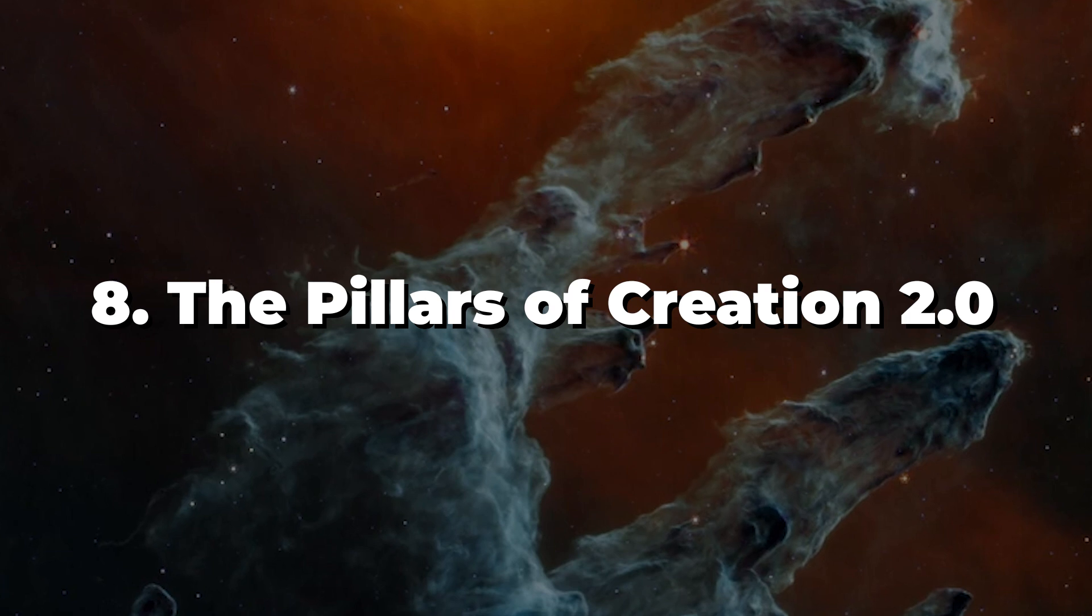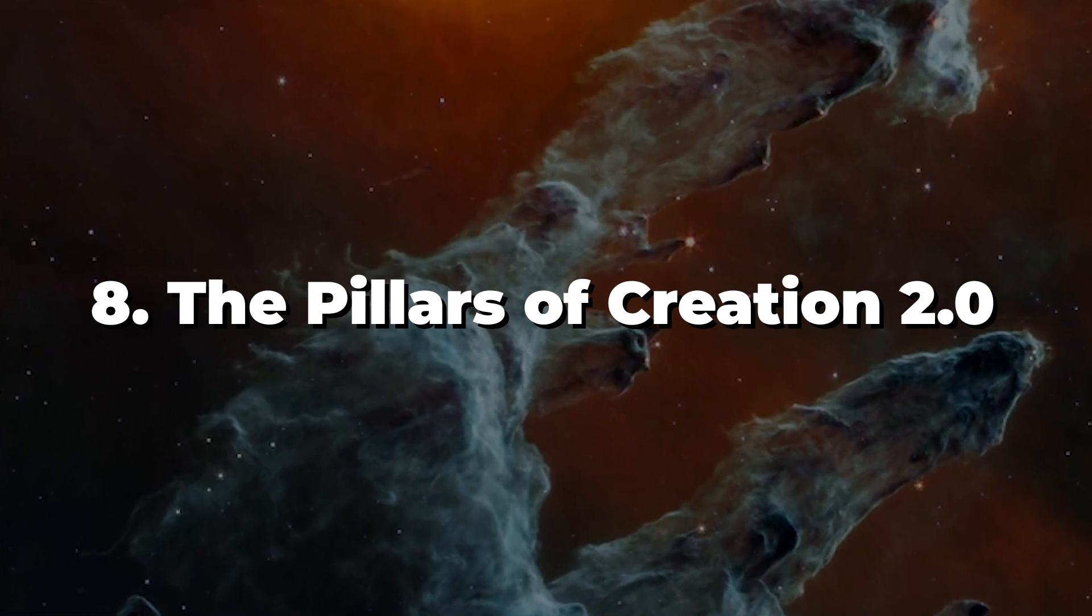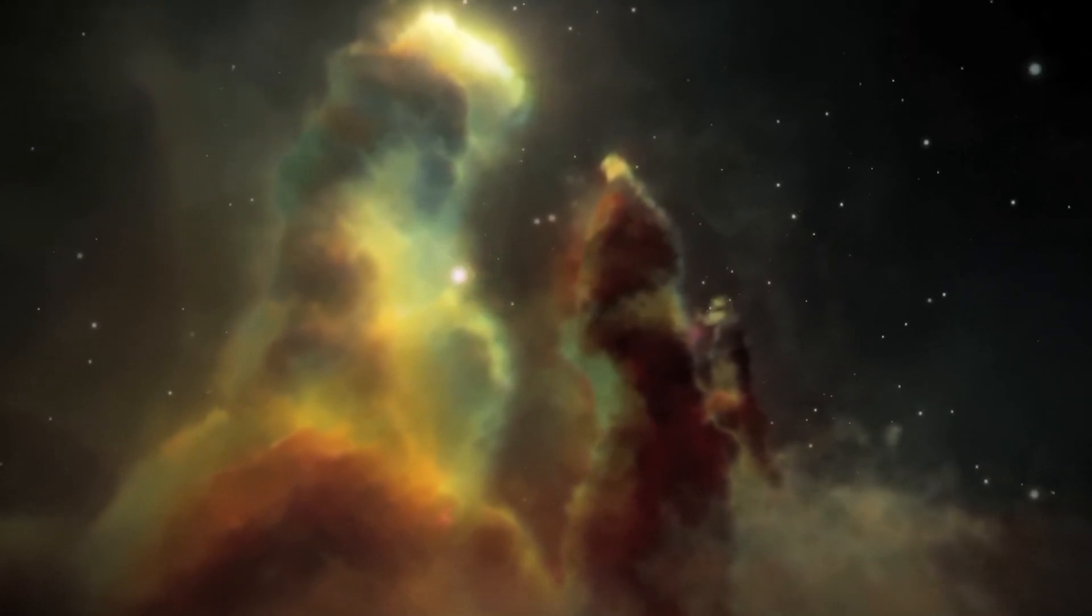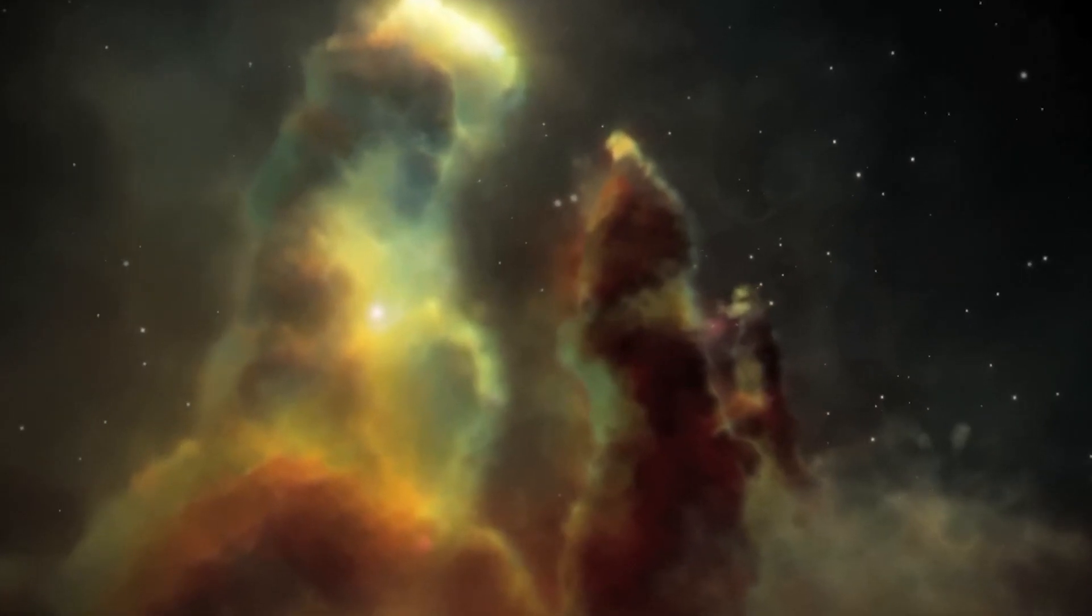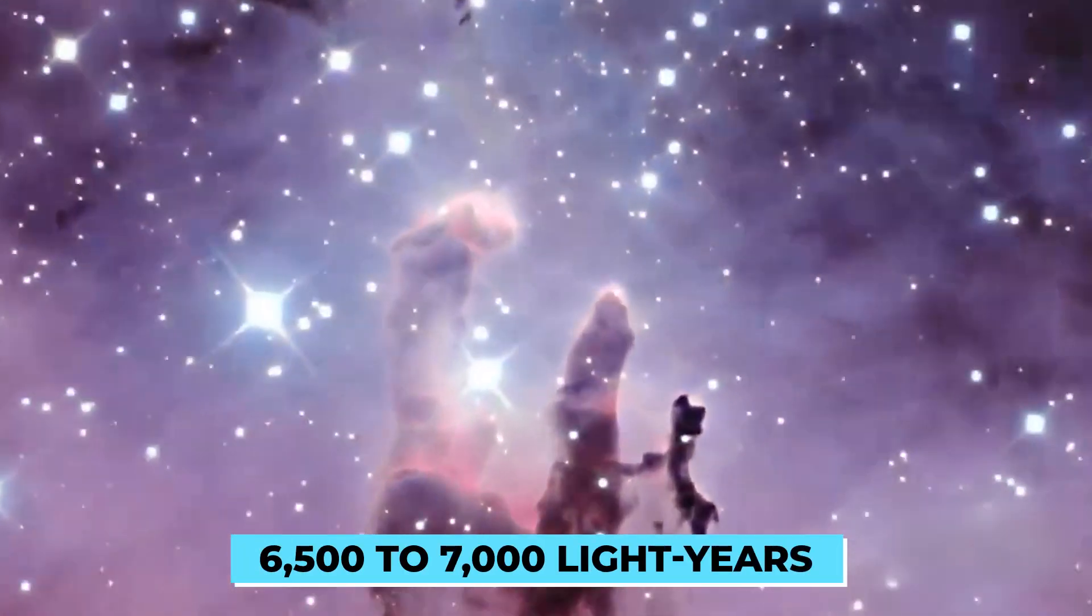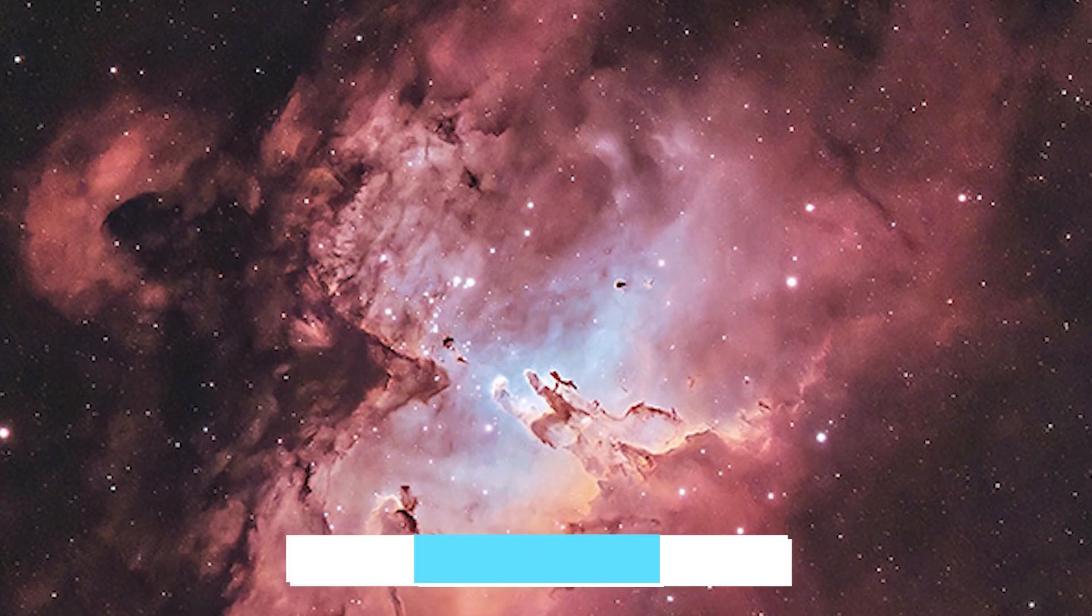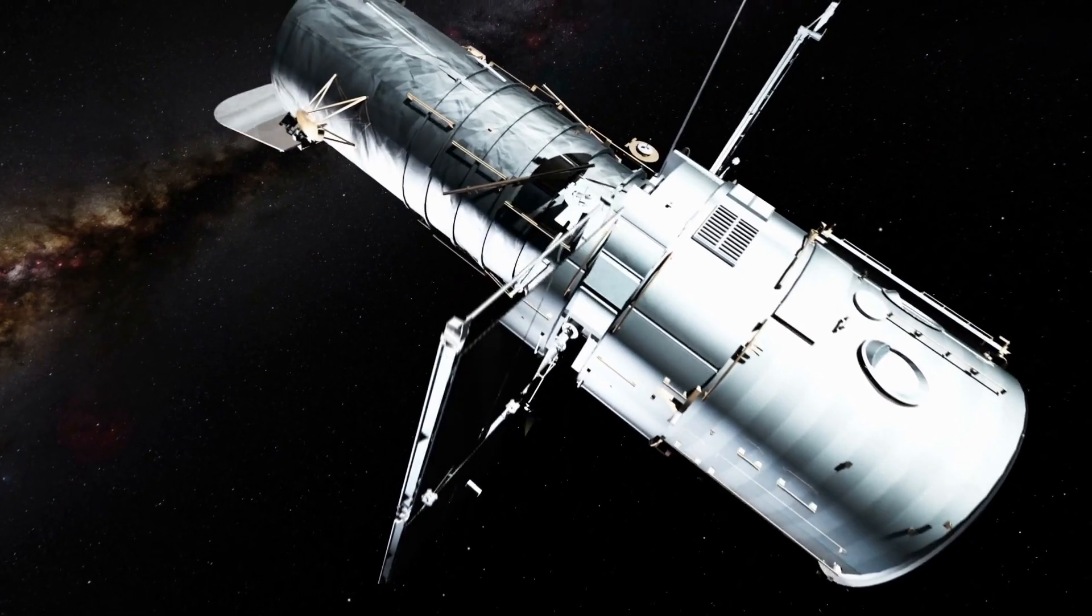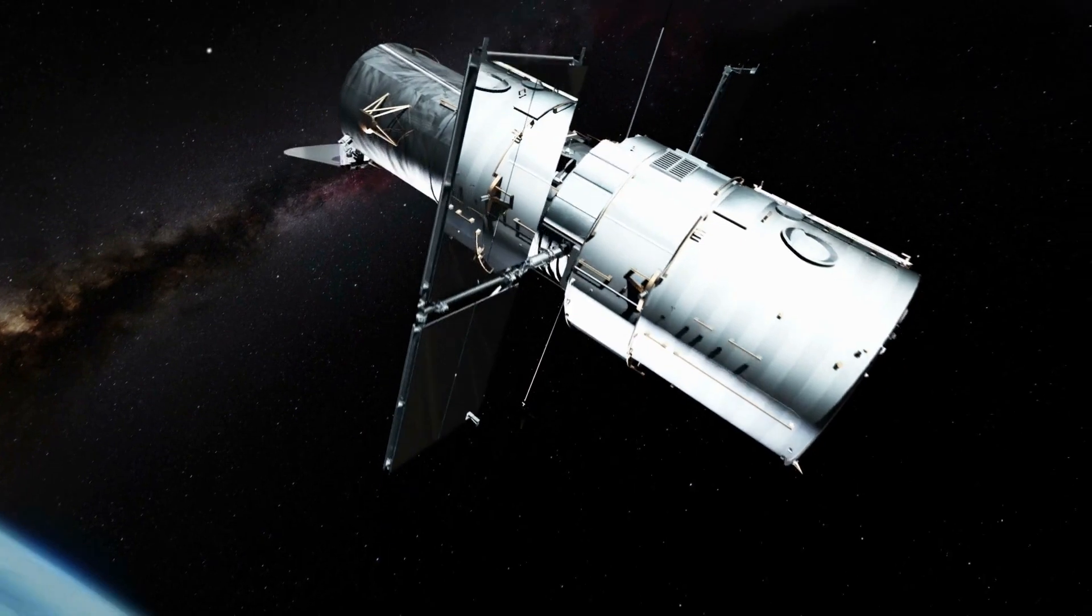Number 8. The Pillars of Creation 2.0. The Eagle Nebula in the Serpent's constellation is located roughly 6,500 to 7,000 light-years away. The Pillars of Creation 2.0 is an improved version of the Hubble Space Telescope photograph.